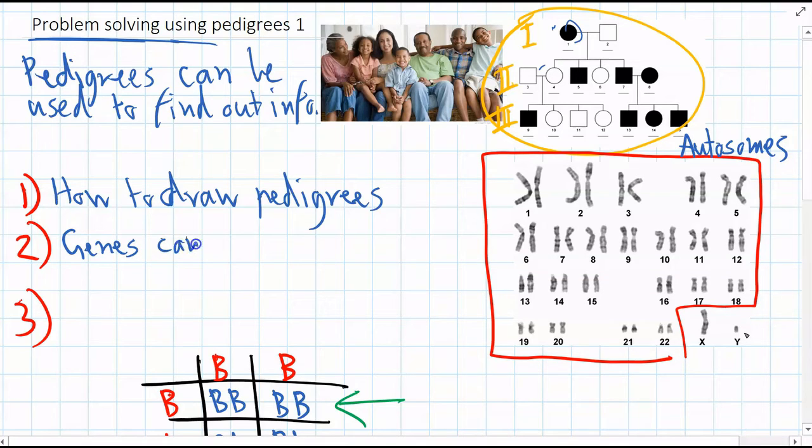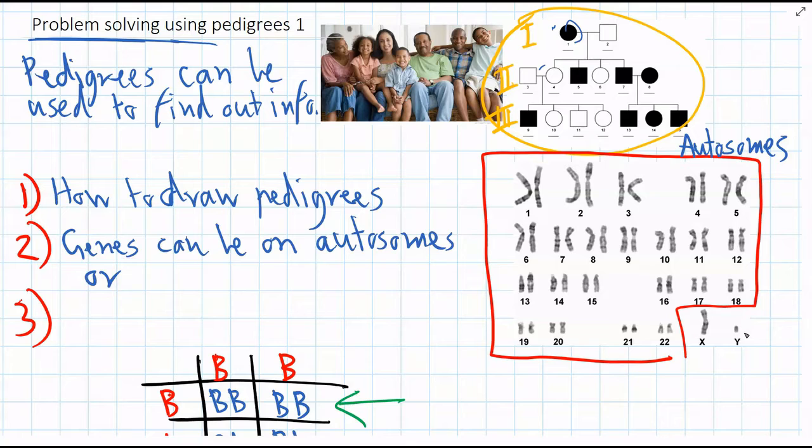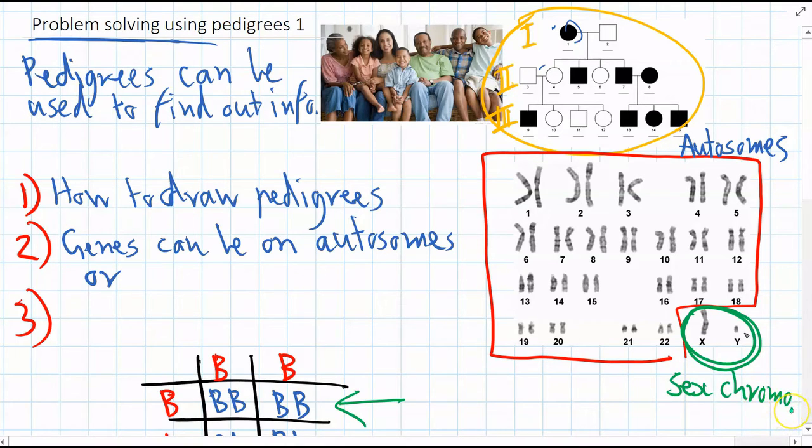So genes can be on autosomes, so then we'll say that the trait is an autosomal trait. Or genes can be on one of the sex chromosomes, the X and the Y chromosome. For now, we're only concerned about genes that are on the X chromosome. So genes can be on autosomes, or they can be on the X chromosome.